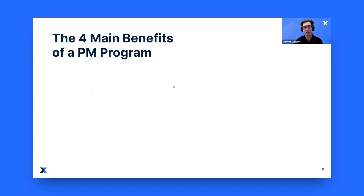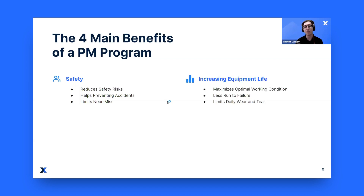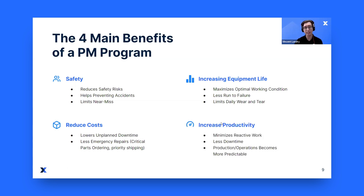The first priority, which should be the priority for everybody whenever we talk about operations, is that safety should always be at the top of the list. The second one is increasing equipment lifetime. The third one is reducing cost. And last but not least, increase productivity.